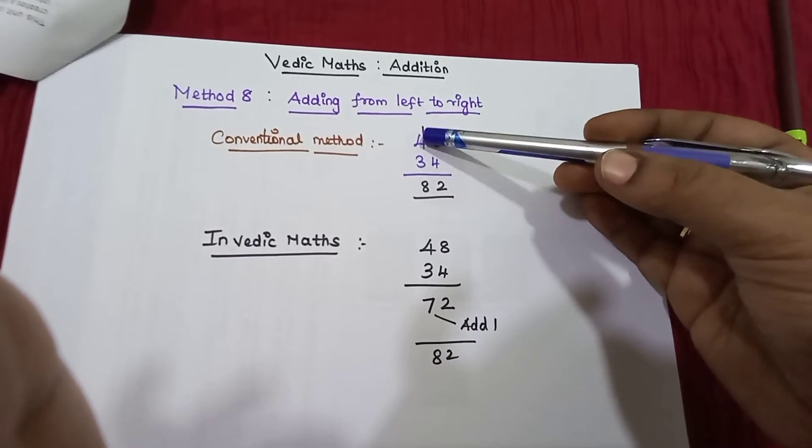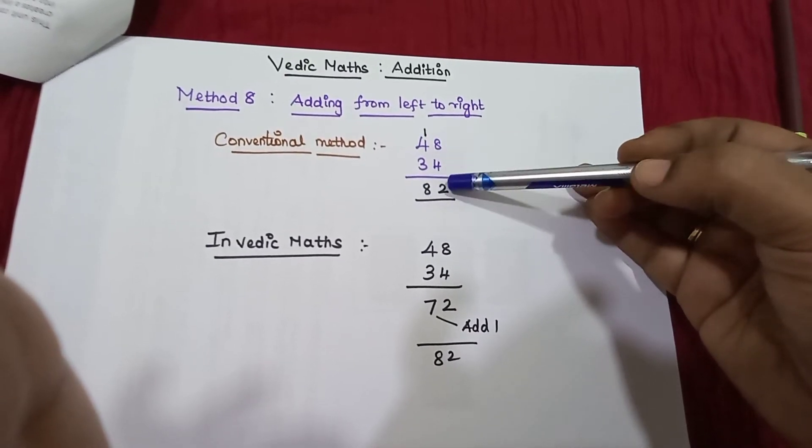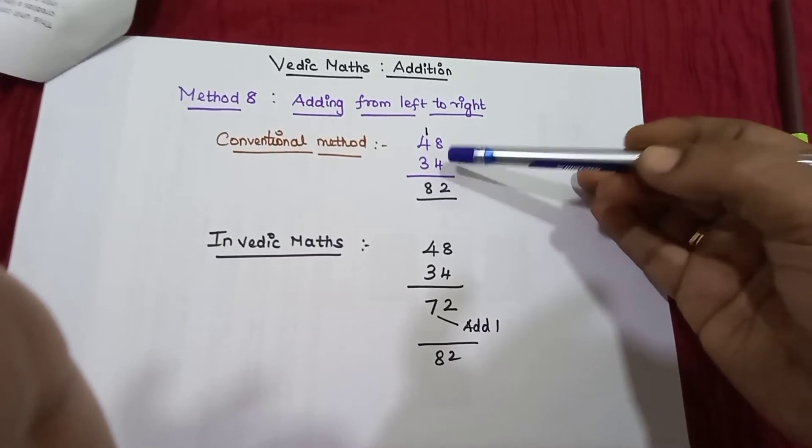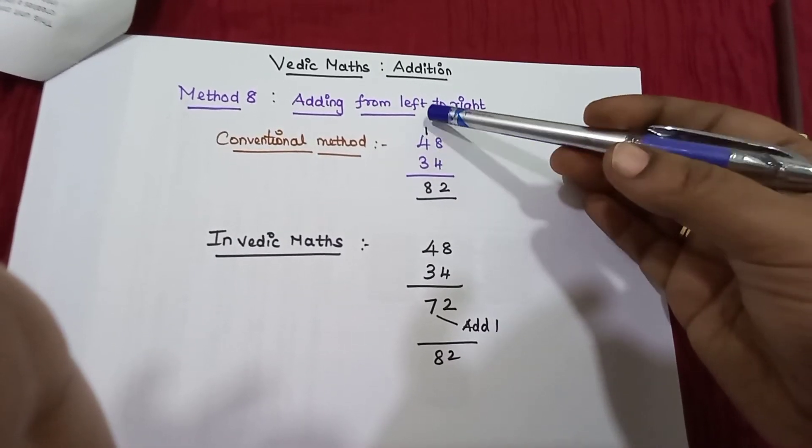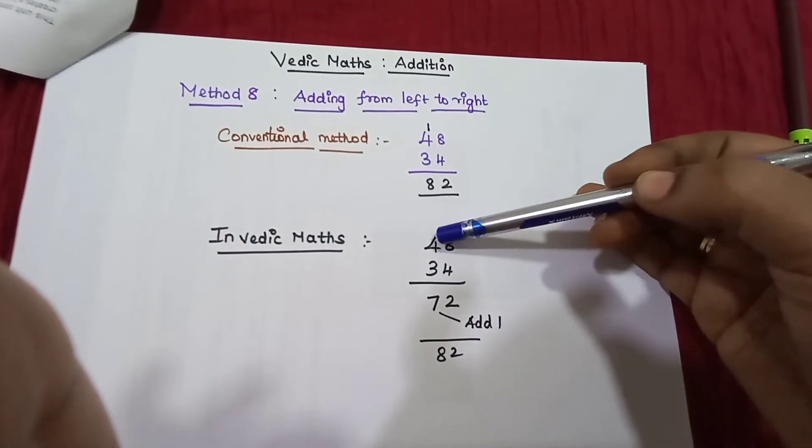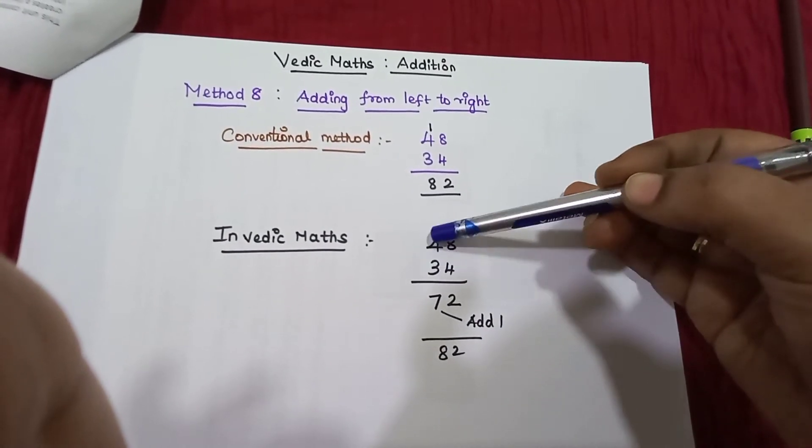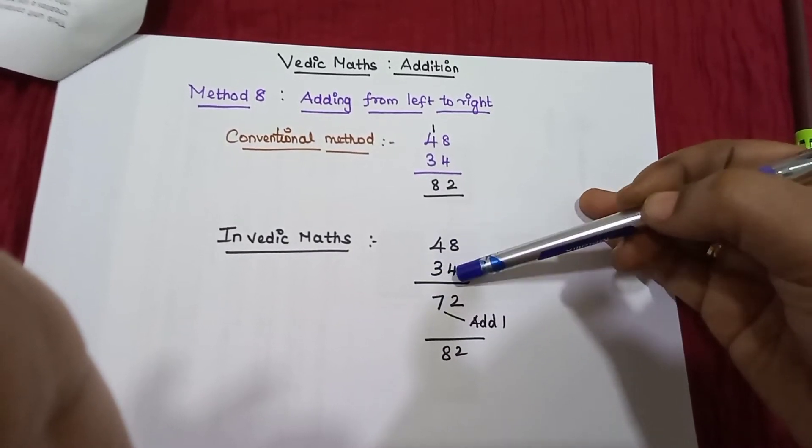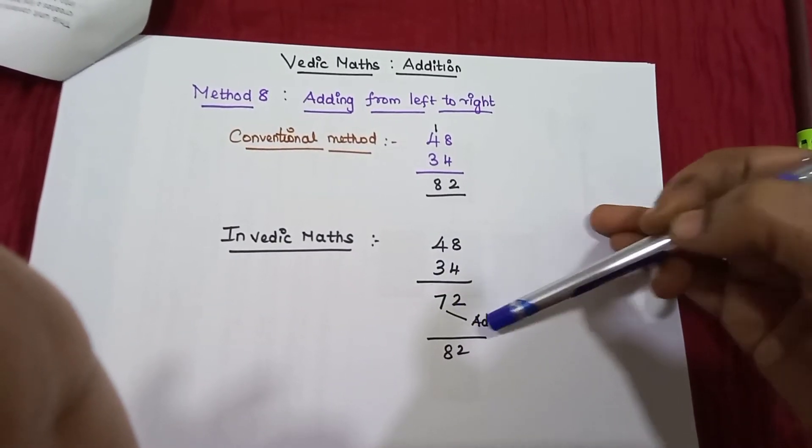3, 7 plus 1, 8. So from this side to that side, right to left. In Vedic Maths, left to right, we have the numbers 48 and 34. 4 plus 3, 7. 8 plus 4, 12, carry